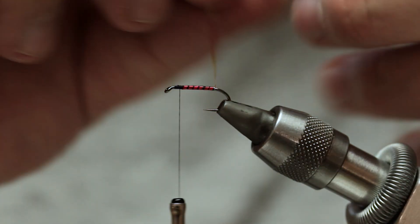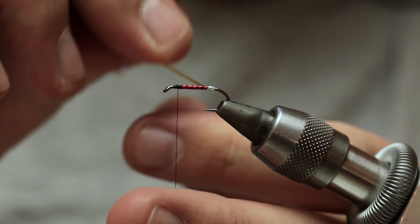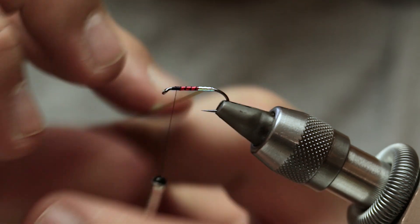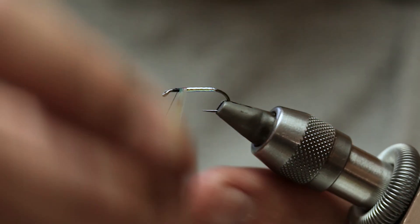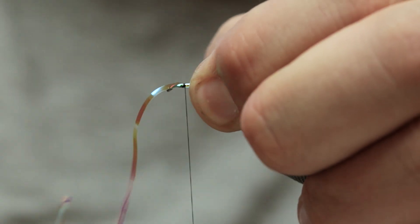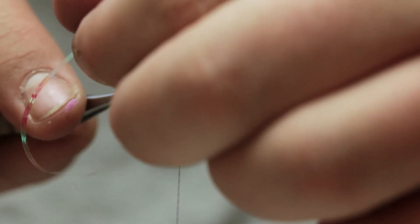Trim. Then take your Opal Mirage. Wrap on, touch in, turns at that point there. Catch off. Trim.